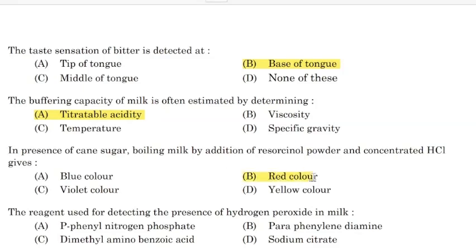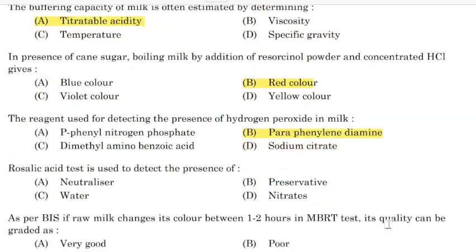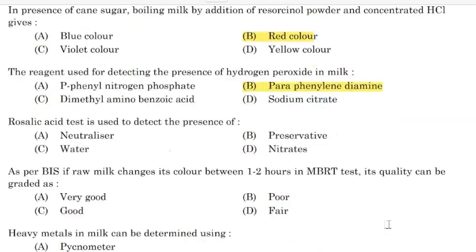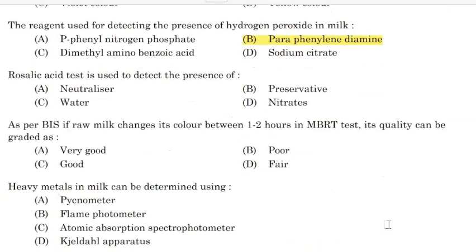Correct answer: Option B — Red color. The agent used for detecting the presence of hydrogen peroxide in milk — Correct answer: Option B — Para-phenylenediamine.